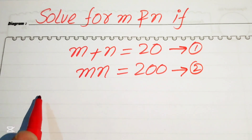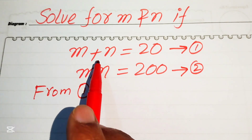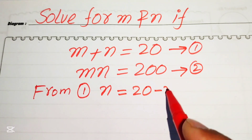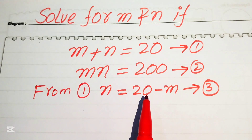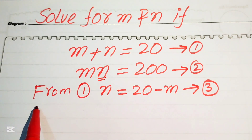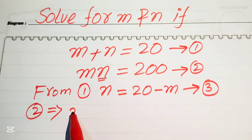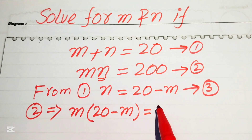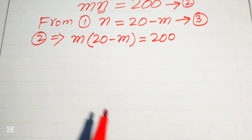We focus on equation number one. We move m to the right-hand side and get n equals 20 minus m — we call this equation number three. Now we substitute equation number three into equation number two, replacing n with 20 minus m, so equation two becomes m times (20 minus m) equals 200.